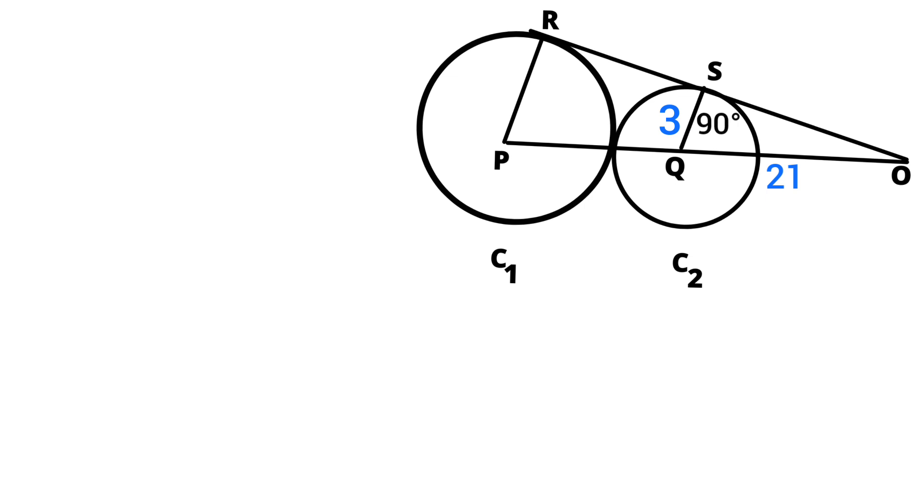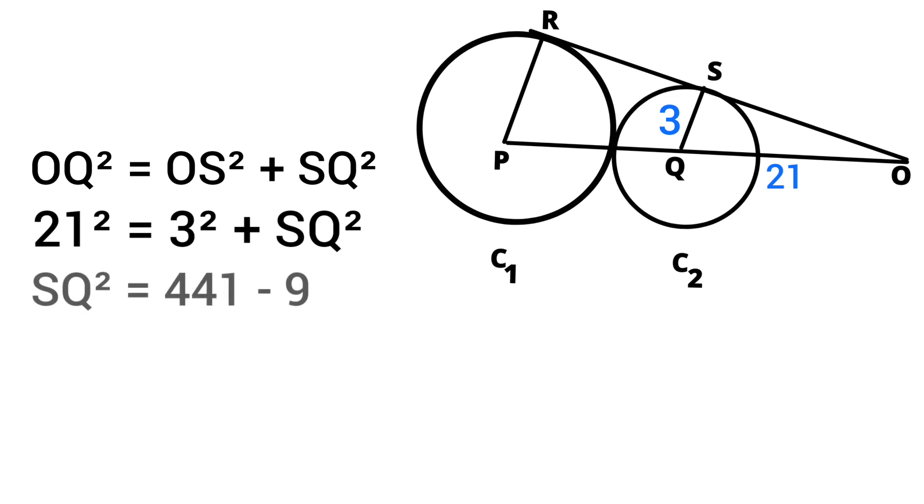OQ square equals OS square plus SQ square. Length of OQ is 21, so 21 square equals 3 square plus SQ square. So 441 minus 9 equals SQ square. SQ square equals 432.